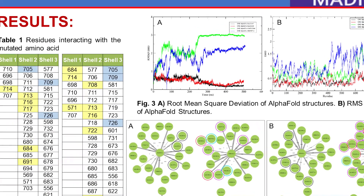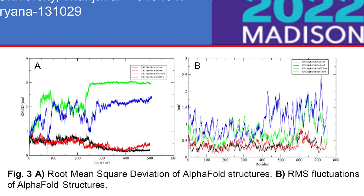We also performed global quality checking of the simulation, plotting the root mean square deviation (RMSD) and root mean square fluctuation (RMSF) of the residues. We found that in the mutants, very high fluctuations are observed.